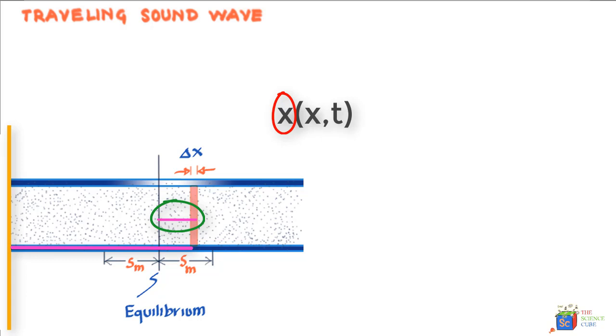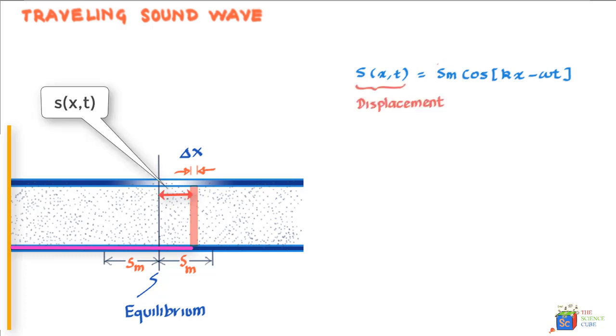So we can write the displacement equation as follows: s(x,t) is equal to s_m cos(kx - ωt). So s(x,t) is the displacement here. s_m is the amplitude of displacement, or just amplitude. And this therefore is the oscillating term.